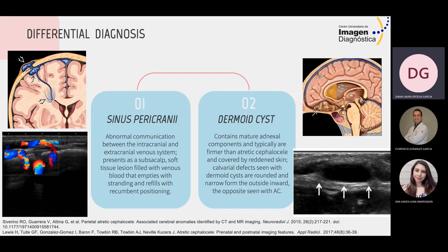The differential diagnoses are sinus pericranii and dermoid cyst, but can include other congenital lesions such as hemangioma, aplasia cutis, lipoma, and cephalo-hematoma.